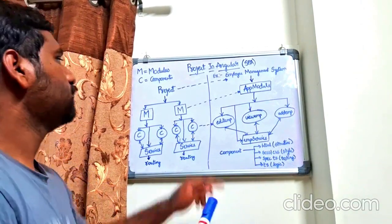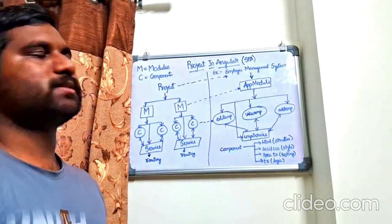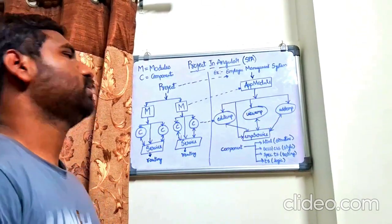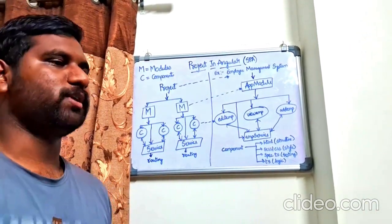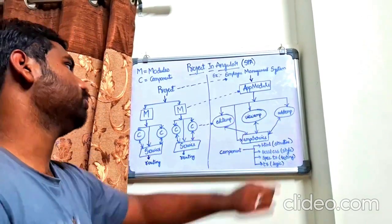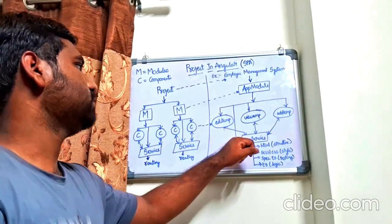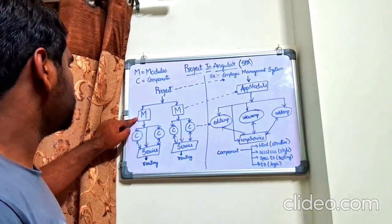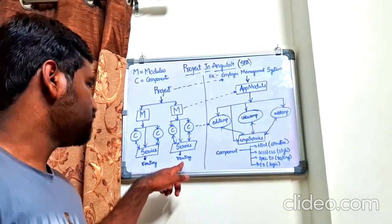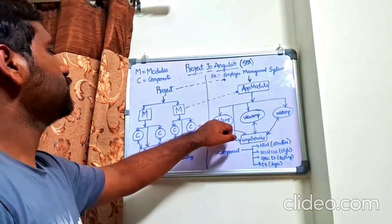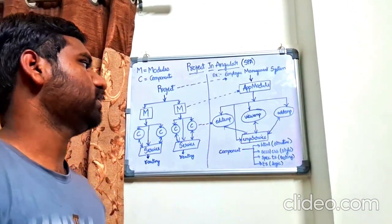This app module consists of three different components. We are going to define three components: Edit Employee, View Employee, and Add Employee. As the title says — Employee Management System — here we are going to perform CRUD operations and then a table view. These three components — Edit Employee, View Employee, and Add Employee — are connected to one single Employee Service, as each module consists of components, a service, and a routing file.